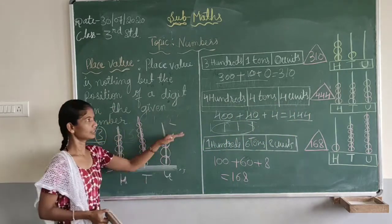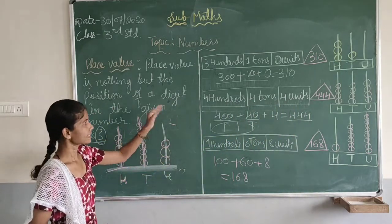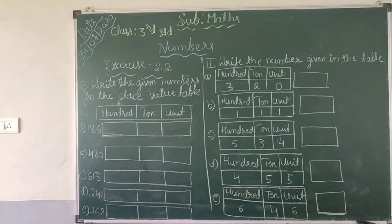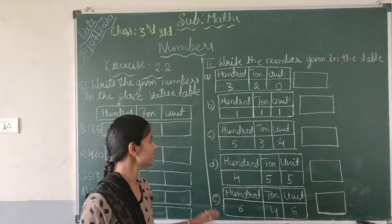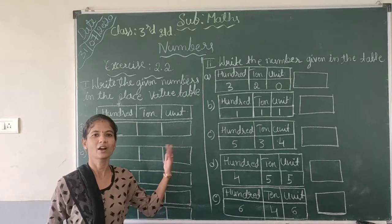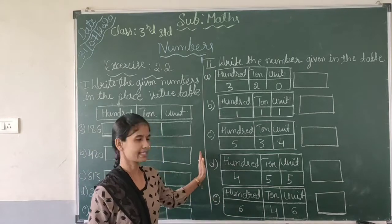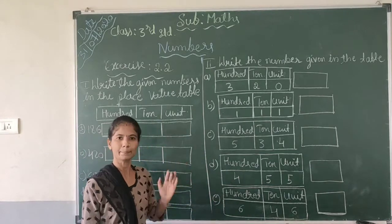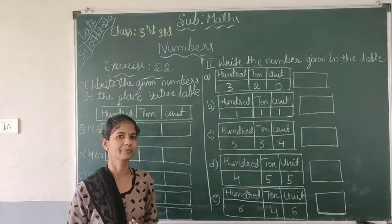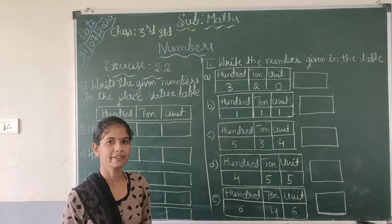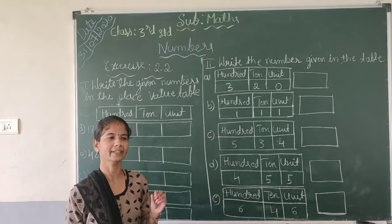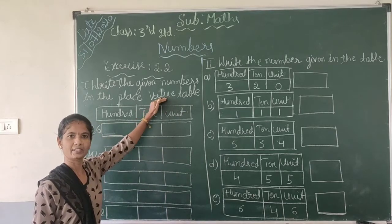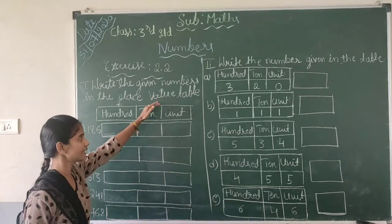I think you all got this point. So in the next class we will move to the next part. Students, we have learned about place value. What is the meaning of place value? The place value is the position of a digit in the number.